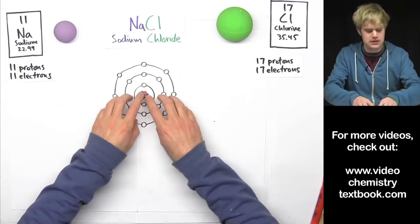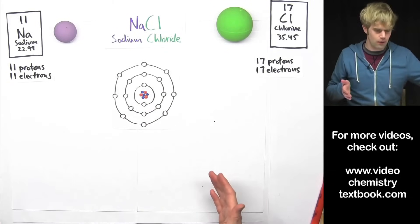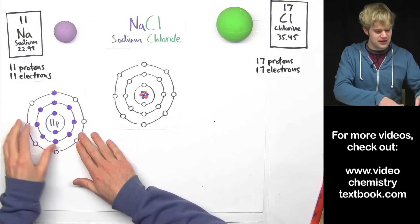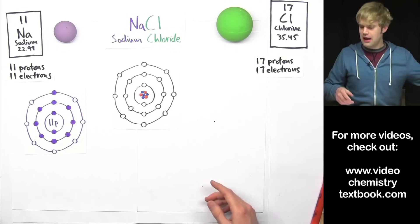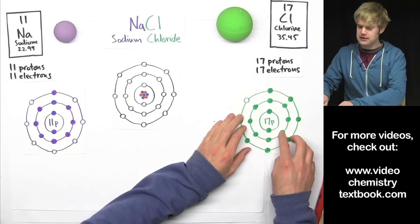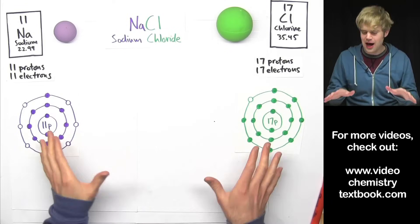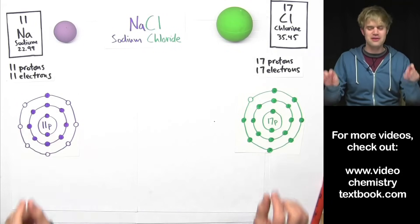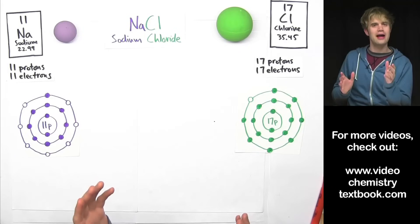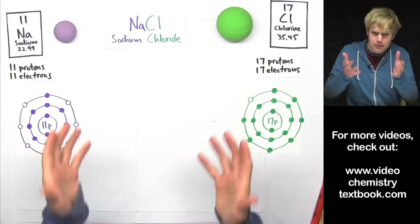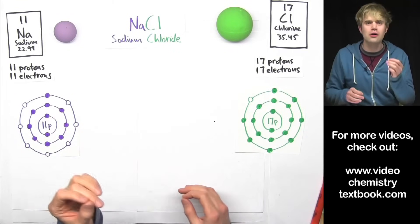Now we can take one of these diagrams and fill it in from the center on out with the number of electrons. So for sodium, that's going to look like this: 11 electrons arranged around the atom from the center out. And for chlorine, it's going to look like this: 17 electrons arranged around it from the center out. Now, these are two very unhappy atoms. The reason why has to do with their valence shells. Do you remember what valence shells are? They are the furthest out energy level that still has electrons in it.